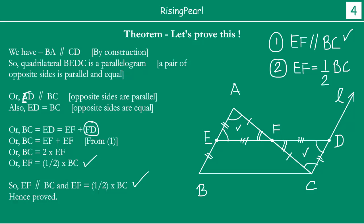This particular theorem is very, very important. You may be asked directly to prove it, as it has two parts: proving the line segment joining midpoints is parallel to the third side, and proving its length is half of the third side. The construction — drawing line L through C parallel to AB and extending EF to meet it at D — is a very critical step you do not want to overlook.